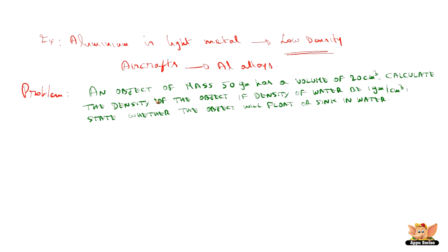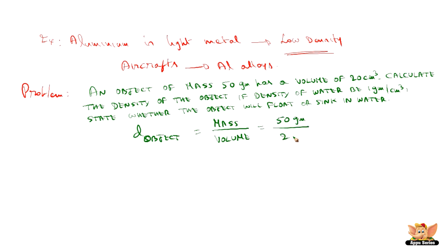Let's see a problem to understand density as a parameter better. An object of mass 50 grams has a volume of 20 centimeter cube. Calculate the density of the object if the density of water is 1 gram per centimeter cube, and state whether the object will float or sink in water. The density of the object equals mass divided by volume, which is 50 grams divided by 20 centimeter cube, which equals 2.5 grams per centimeter cube.